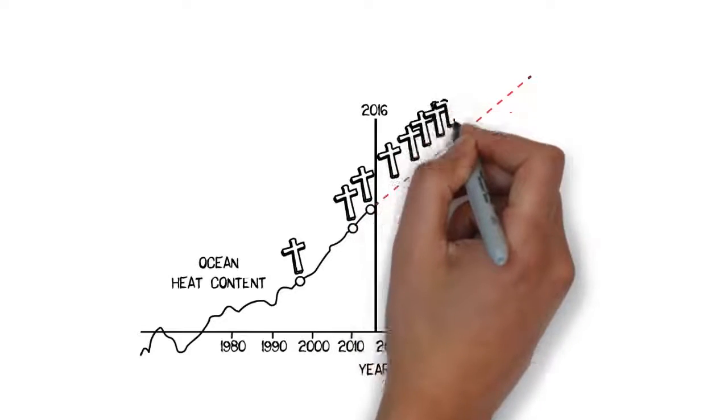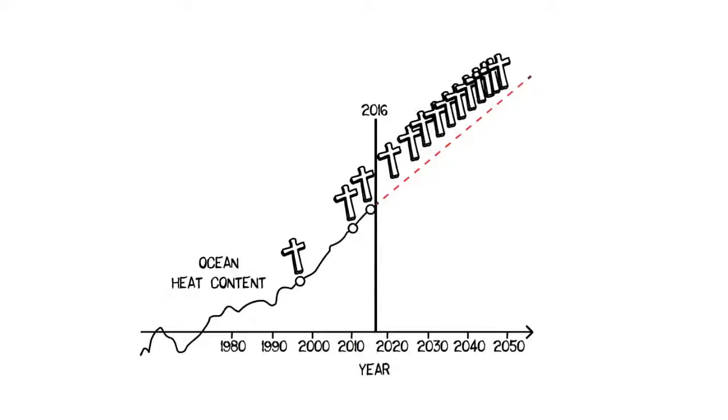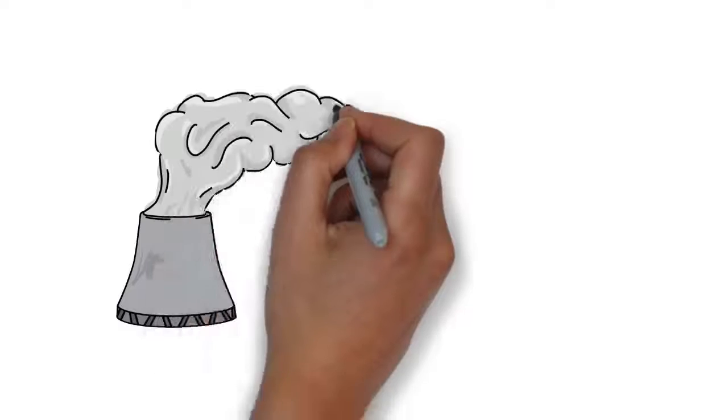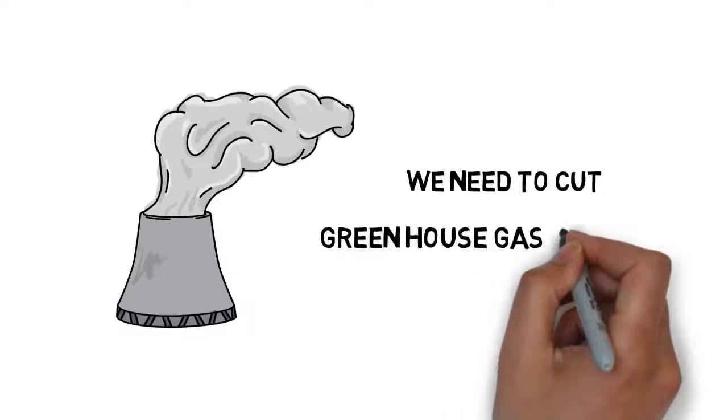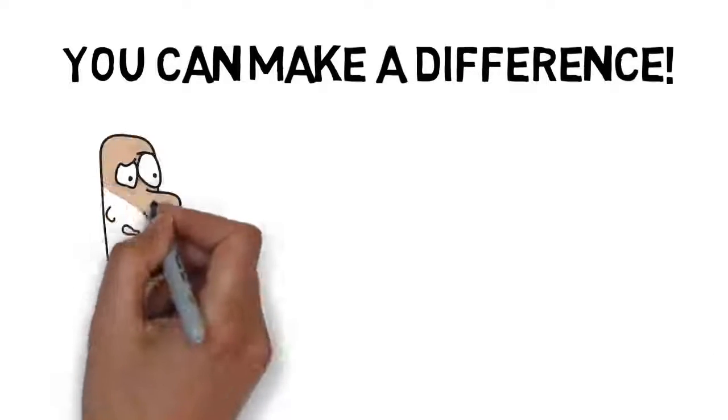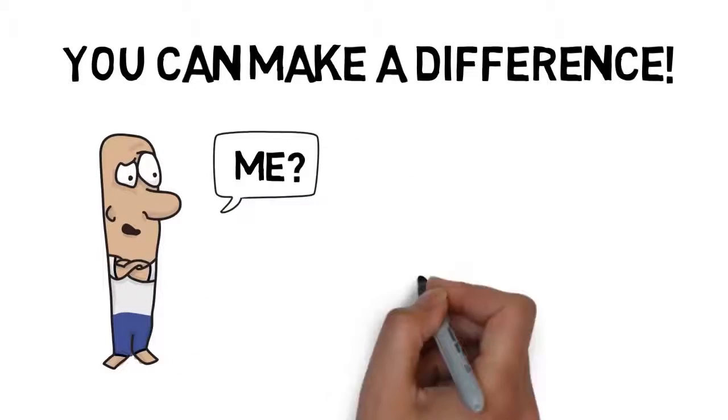And the reef will simply have no time to recover between bleaching events. Can we do something about this? Yes, we actually can. We still have time to avoid the worst climate change scenarios. All we need to do is to reduce carbon emissions. And you can help. I will ask you to do three very simple things.